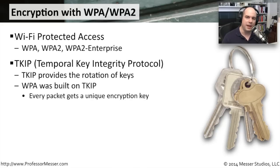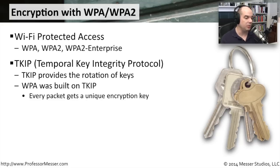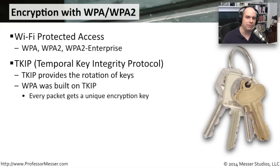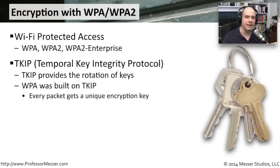When WPA first came out, it used something called TKIP — the Temporal Key Integrity Protocol — to encrypt the data going by. This was an improvement over WEP, primarily because TKIP allowed us to change the keys in every packet. We rotated through those keys, which made it very difficult to decrypt the data. Every packet got a unique encryption key, so there was constant change. This was really a stopgap measure — there were stronger encryption algorithms available — but TKIP allowed older hardware to still maintain an encrypted connection.